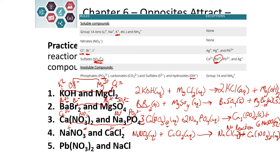Let's balance this one anyway. Calcium nitrate has two nitrates, so we put a 2 in front of NaNO₃ on the right. That changes sodium: we put a 2 in front of NaCl on the left, giving two sodiums and two chlorides on the left, and two chlorides on the right. We are balanced.